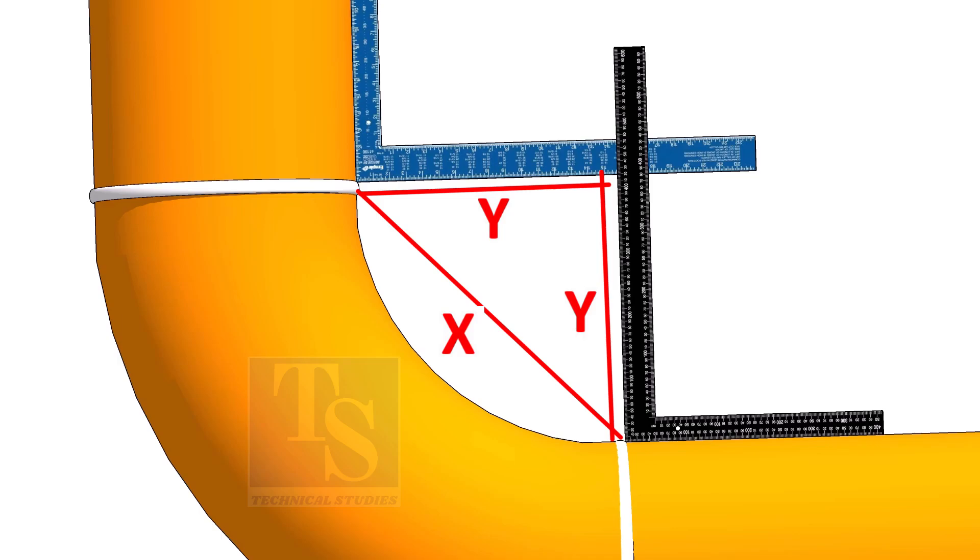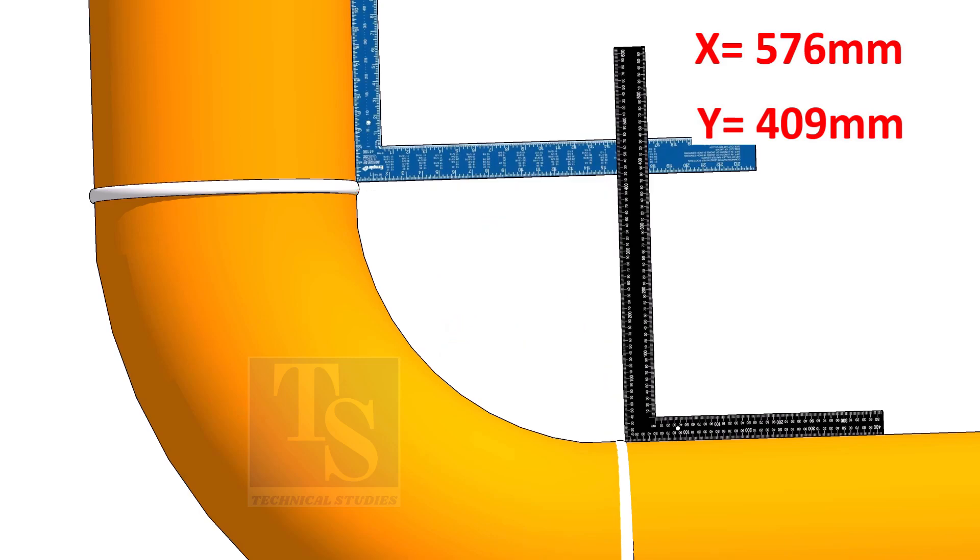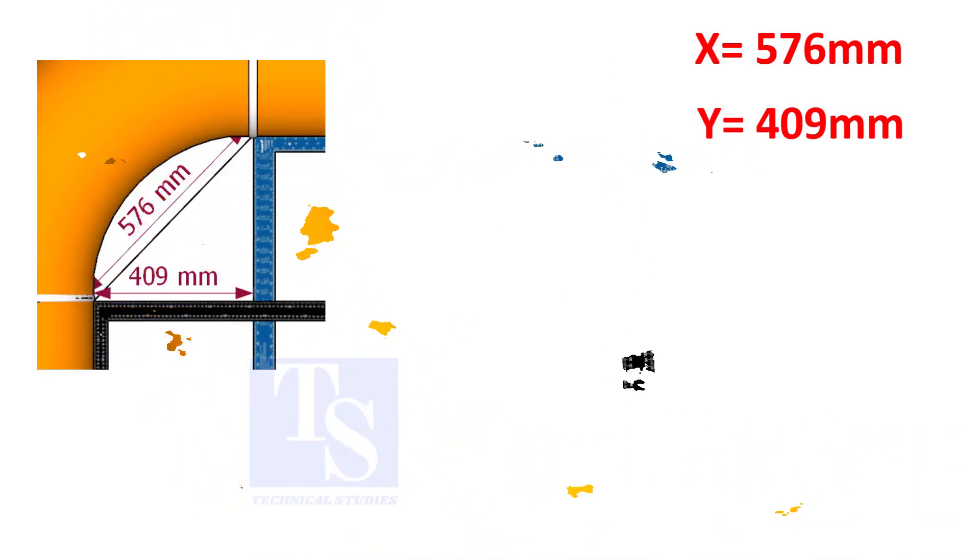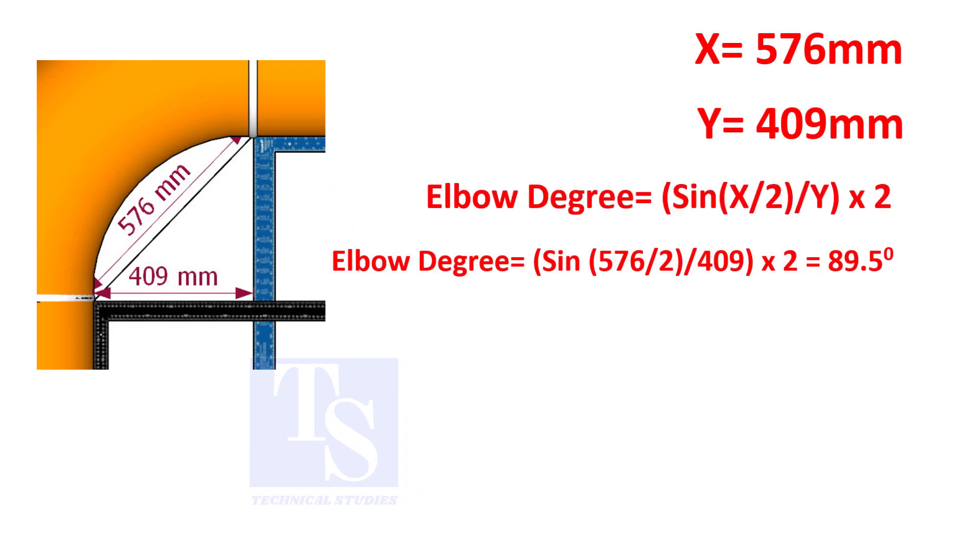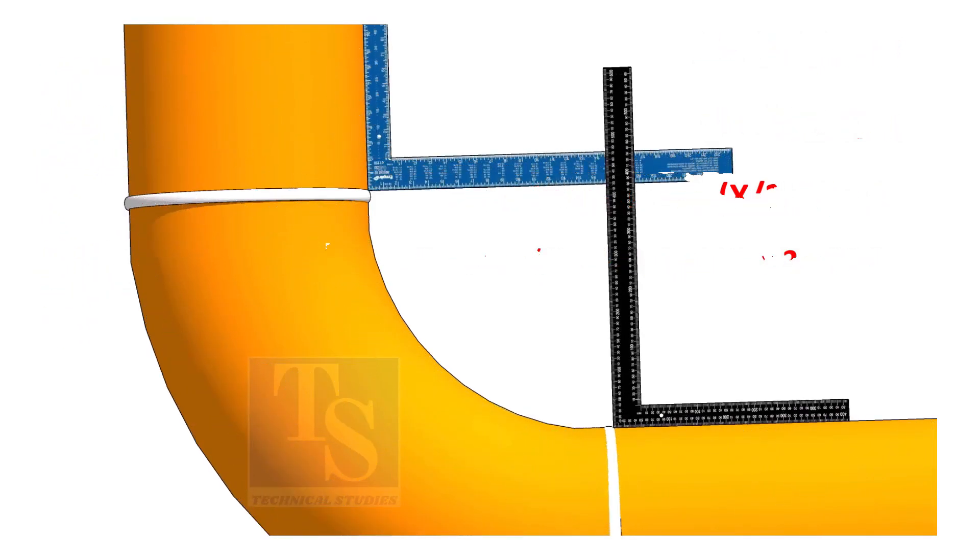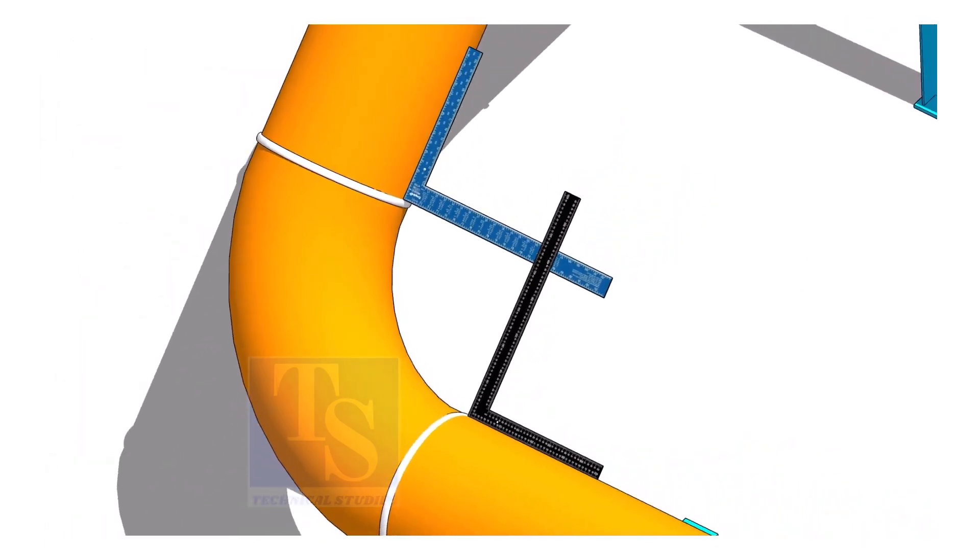Assume that the value of X is 576 and the value of Y is 409 millimeters. Apply the formula. The answer is 89.5 degrees.